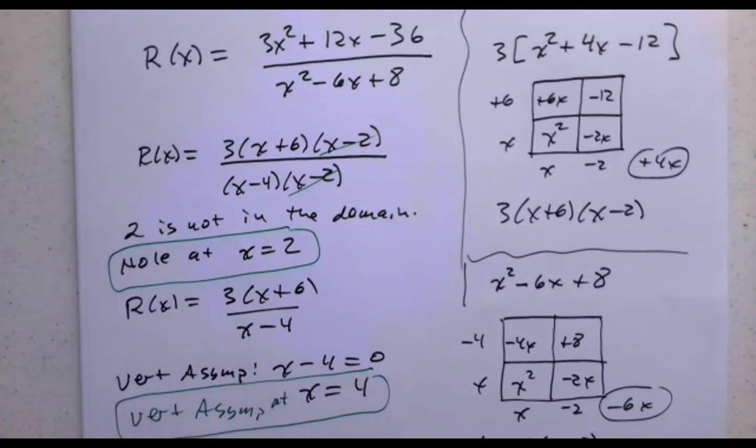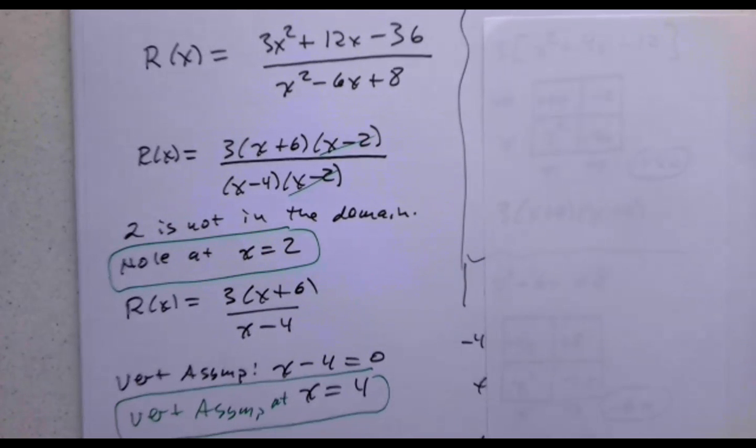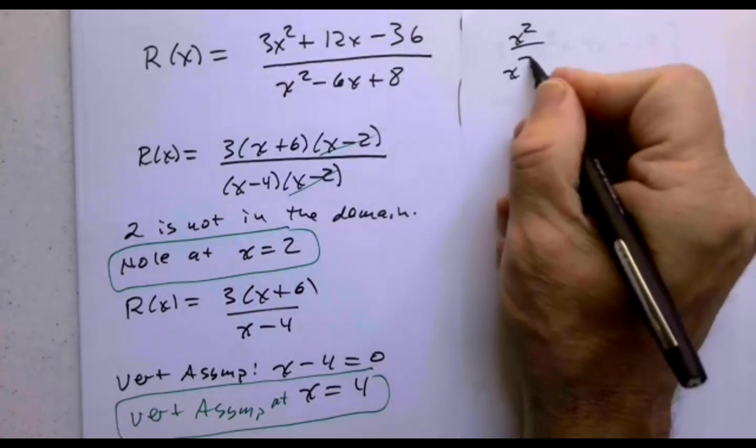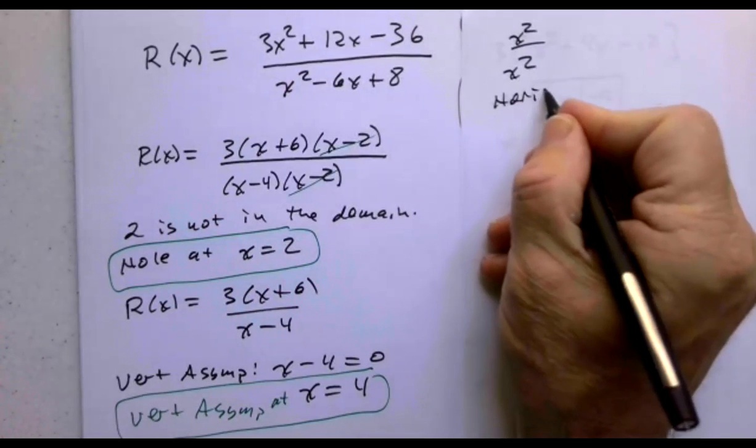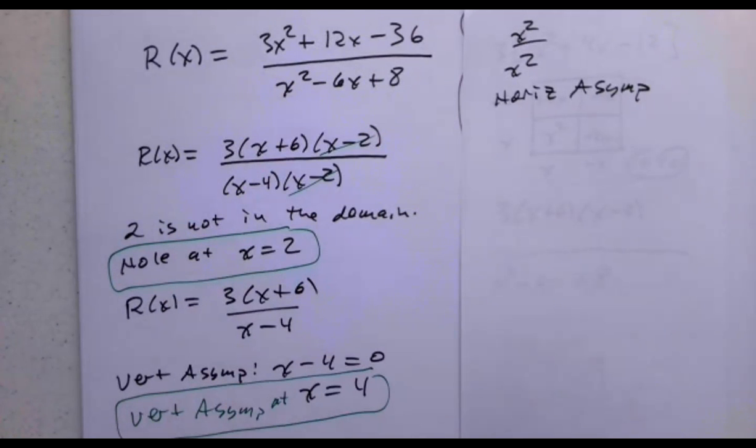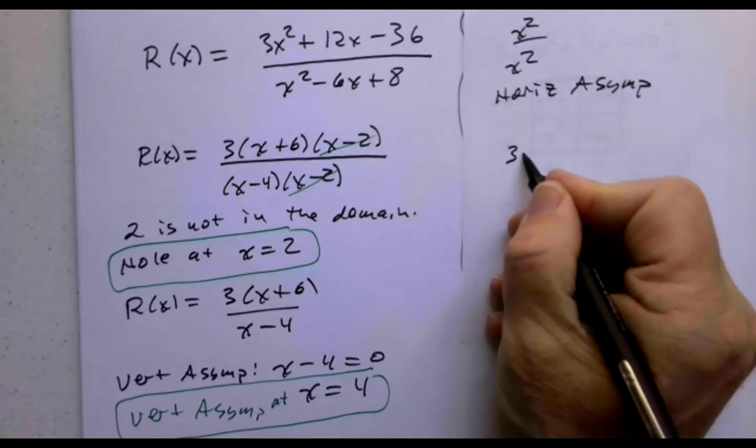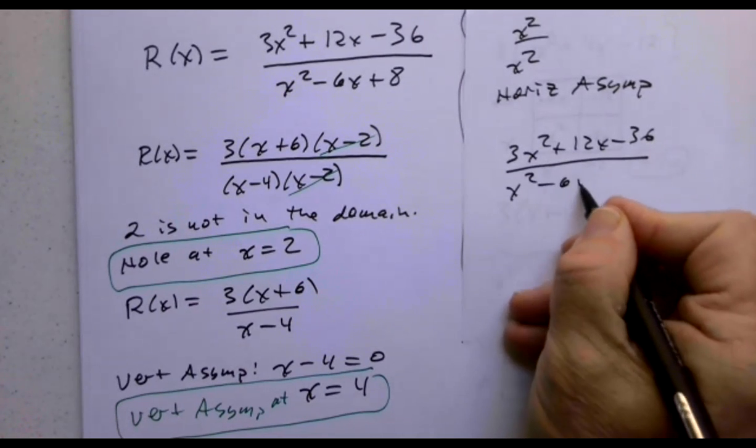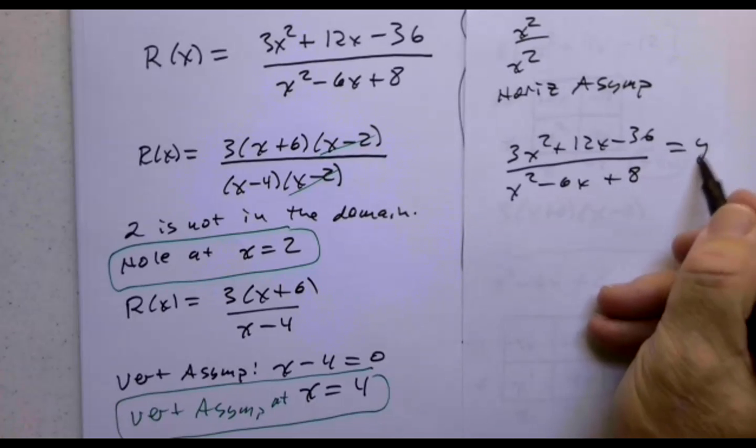Then I also want to find the horizontal asymptotes. If we go back and look at the original question, what do you notice? The numerator and the denominator have the same highest power. The highest power upstairs is x squared, the highest power downstairs is x squared. When that happens, we will have a horizontal asymptote. We're going to divide the highest powers.